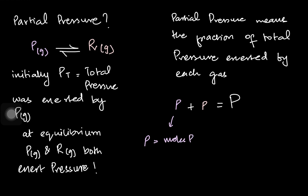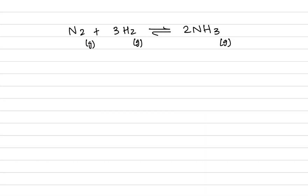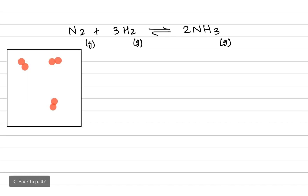The partial pressure of the purple gas equals its mole fraction times total pressure — that is, moles of purple divided by total moles, times total pressure. Similarly for the red gas: moles of red divided by total moles, times total pressure. We find the mole fraction and multiply by the total pressure.